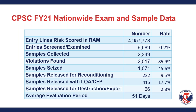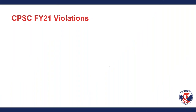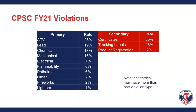Looking at violations for last fiscal year: this was interesting because in seven years, lead violations have always led. This is the first time another violation type overtook it. Some entries will have more than one violation type — going back to our pullback car example, if the car contained lead and lacked a tracking label or certification, that's three violations for one product.